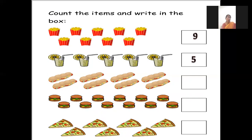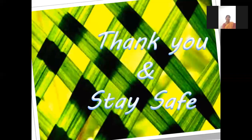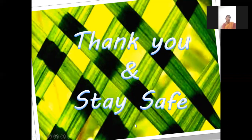Hot dogs — now just see how many: 1, 2, 3, 4, 5, 6, 7, 8 — we will write 8. Burgers: 1, 2, 3, 4, 5, 6, 7, 8, 9, 10, 11, 12 — so 12 burgers. Pizza slice: 1, 2, 3, 4, 5, 6, 7 — we will write 7. Got it everybody? So we have to practice at home. Thank you and stay safe.